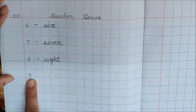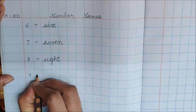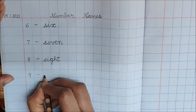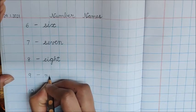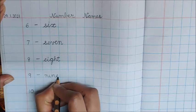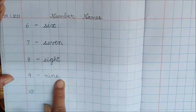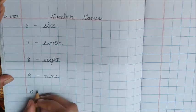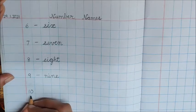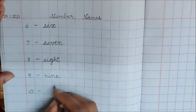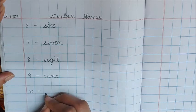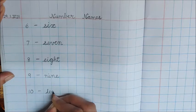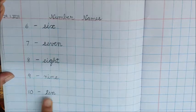Now what is this number? 9. So after 9, put a dash and write the spelling of 9. N-I-N-E, 9. Now what is this number? 10. Put a dash, and you know the spelling of 10. Write it on your own.